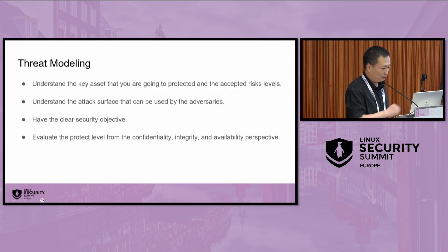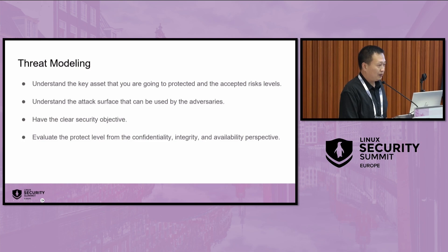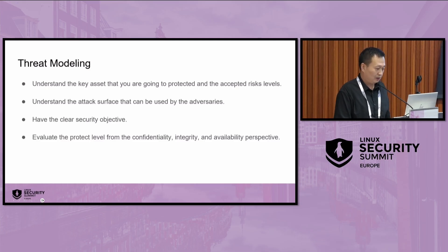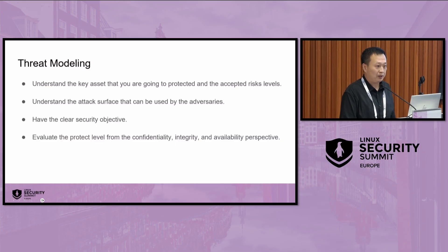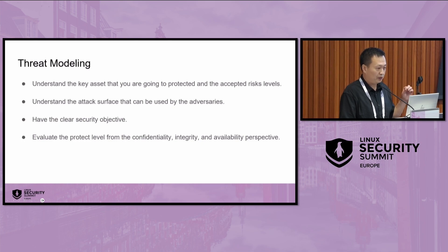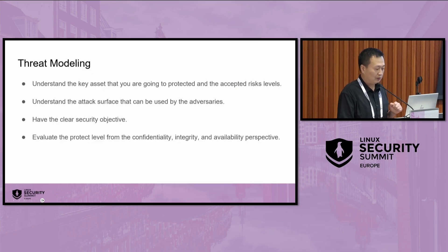How to prioritize CVEs? The first step is threat modeling: you must understand what you want to protect, what the key assets are, the attack surface that can be used by adversaries, and your security objectives — evaluating protection level from confidentiality, integrity, and availability perspectives. Last year, our team delivered a small operating system called Azure Microvisor Toolkit, which works as a Docker container. When we designed the security model for that small OS, we incorporated many security features such as DM-verity, read-only file systems, and SDS. With all of these, we can reduce a lot of security risks, which helps us prioritize CVEs accordingly.